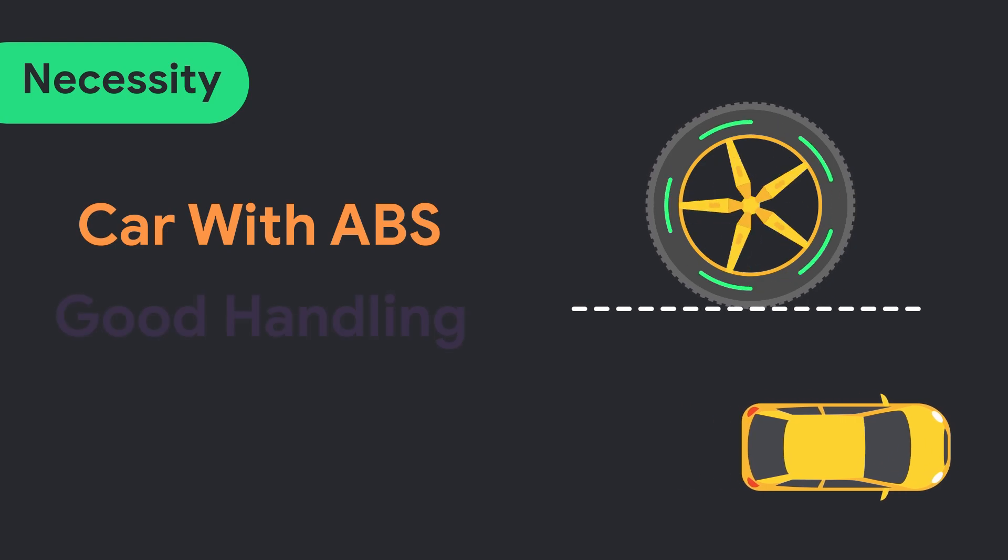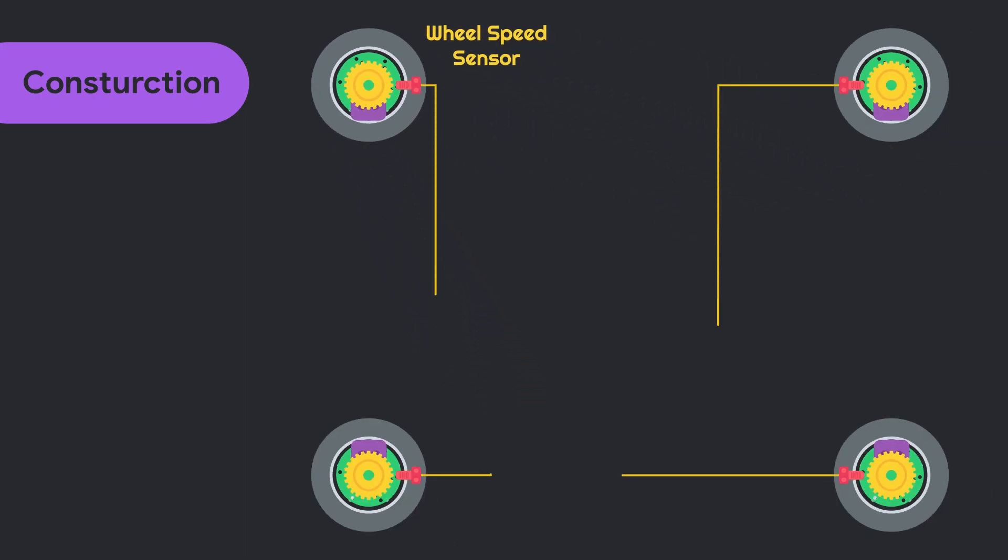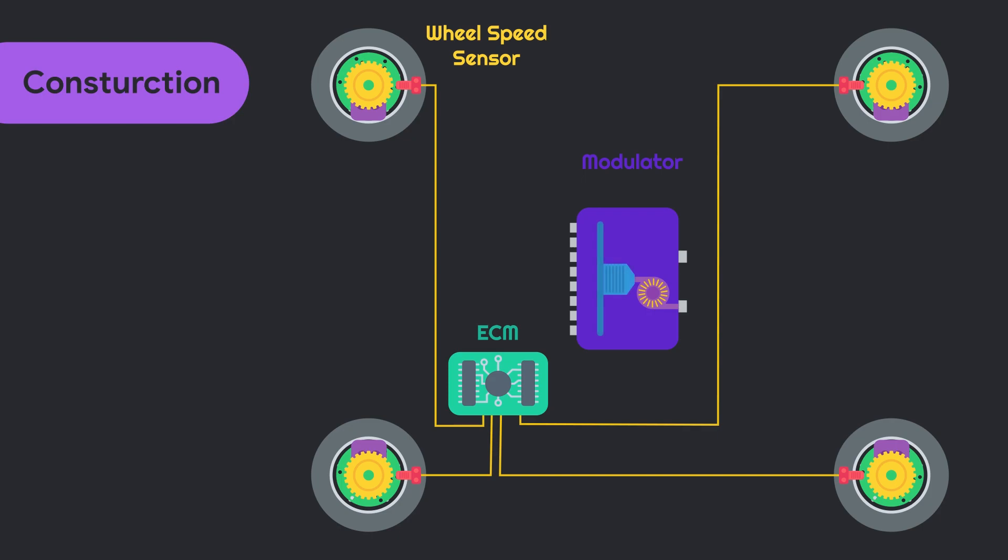ABS consists of wheel speed sensor, which is made of a tooth wheel and sensor element. Wheel speed sensor is equipped in every wheel which is connected with ECM. One hydraulic modulator consists of electronic oil pump, one high-pressure accumulator, and solenoid valve assembly.